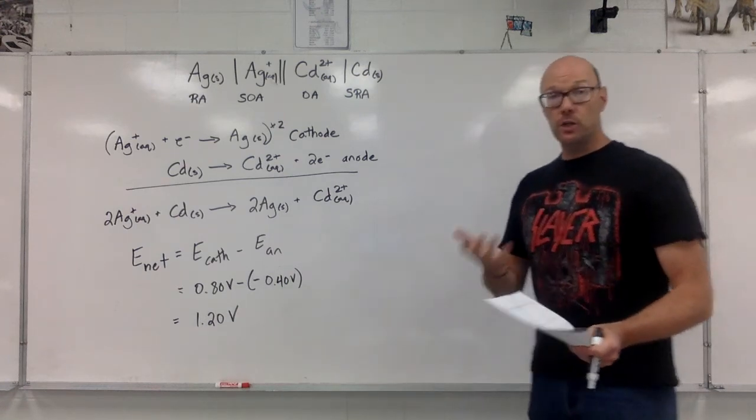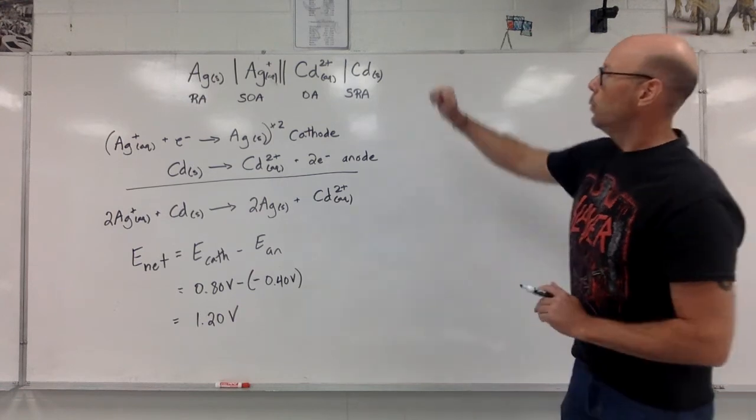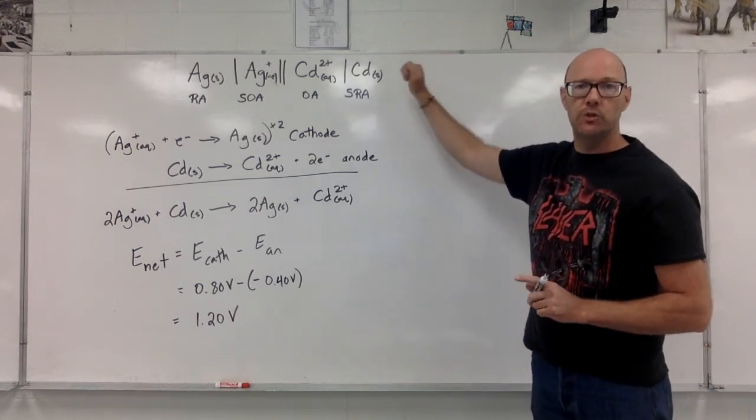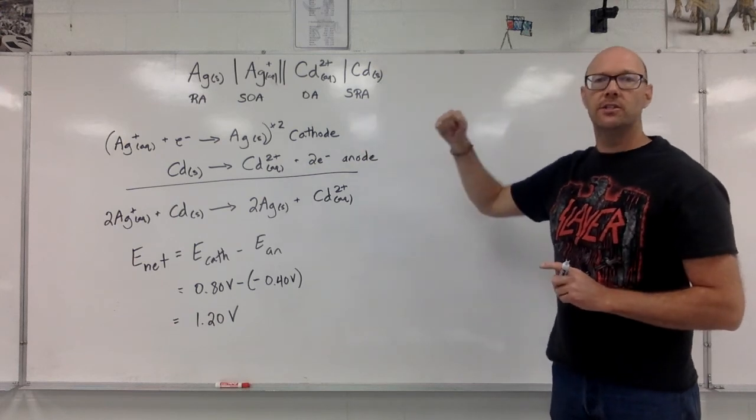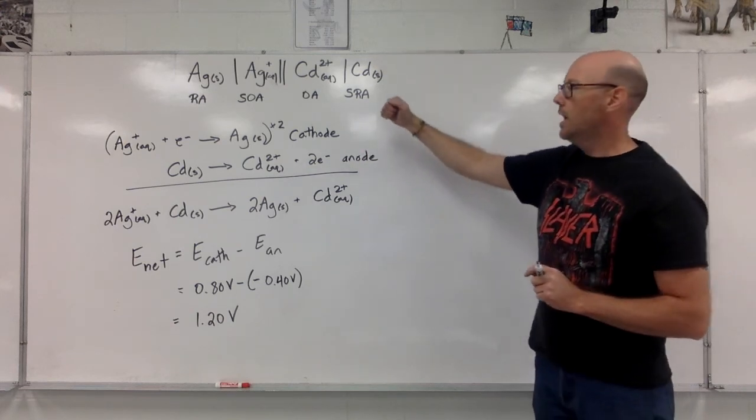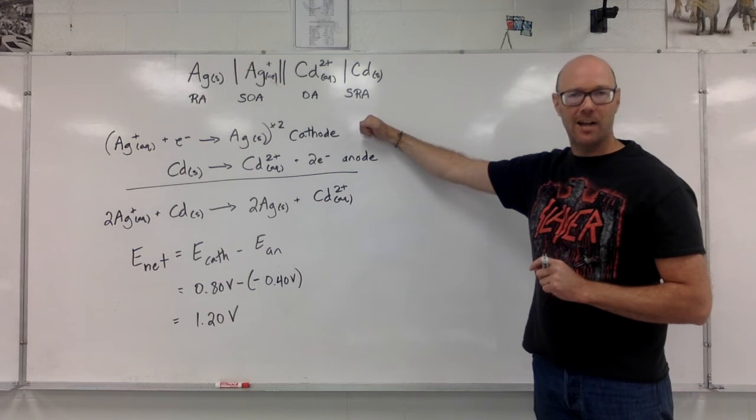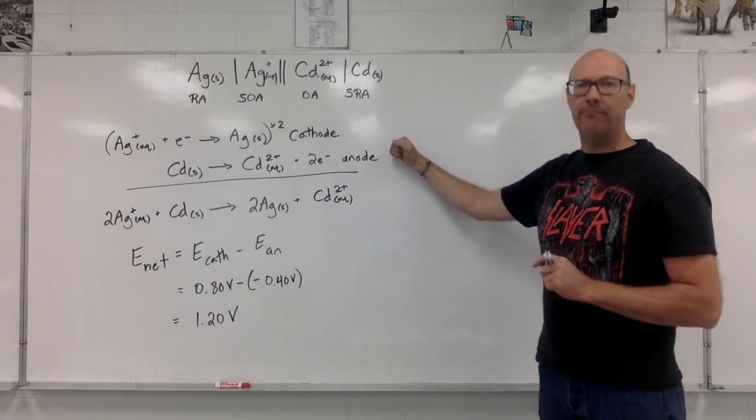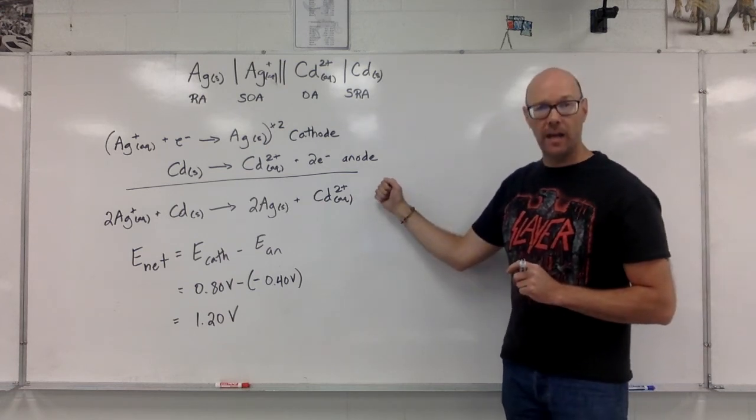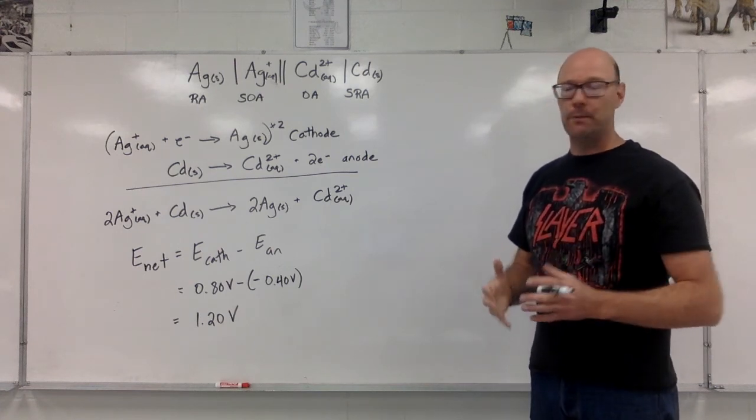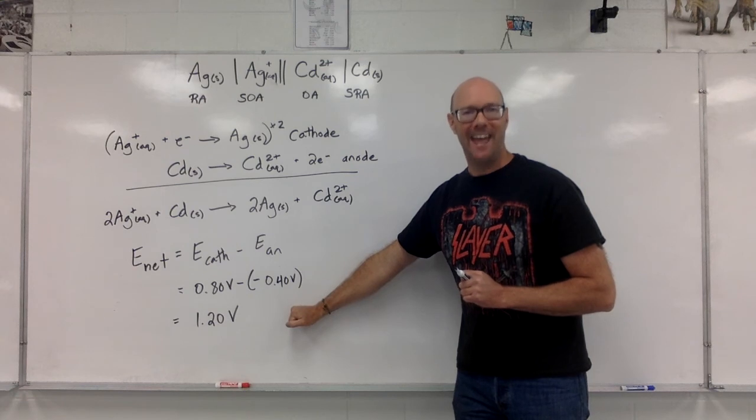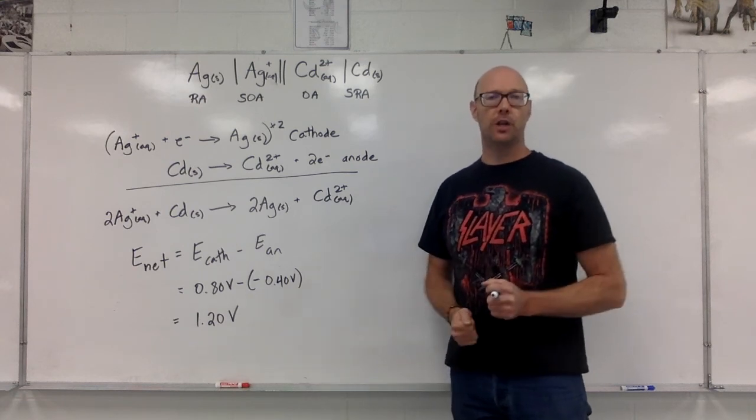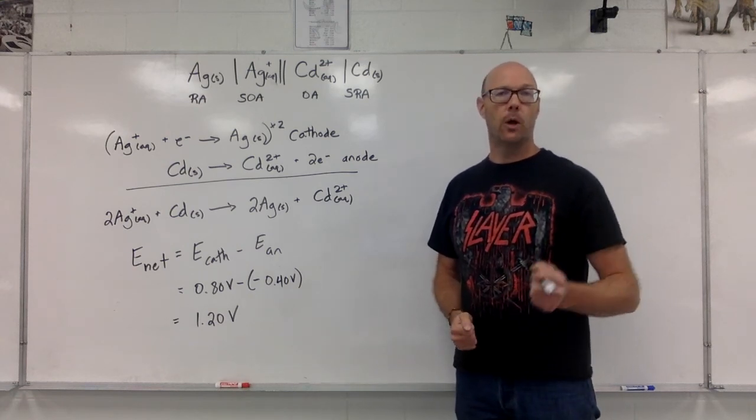When we have the notation, we don't have to have a picture. We can take the notation and use it as our list to identify the strongest oxidizing agent, strongest reducing agent, the cathode half reaction, the anode half reaction, the net cell reaction, and by using the values in the data booklet, we can calculate the net cell potential, the voltage of the voltaic cell. And I hope that helps.